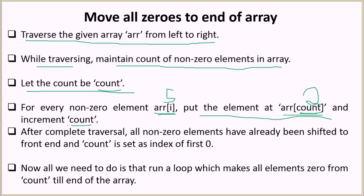For zero elements we just ignore them for now. After the traversal is complete, all the non-zero elements will have been shifted to the front and count is set as the index of the first zero. Because we increment count after each non-zero element, all non-zero elements are to the left of that index. Now all we need to do is run a loop and make all elements from index count to the end of the array equal to zero.